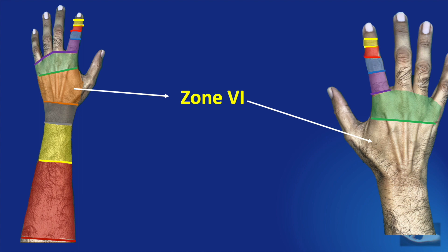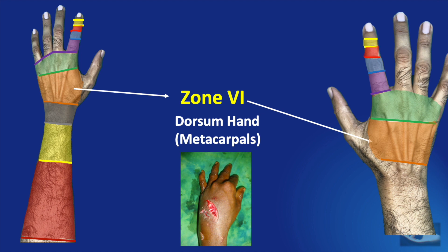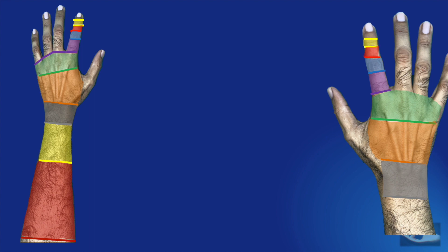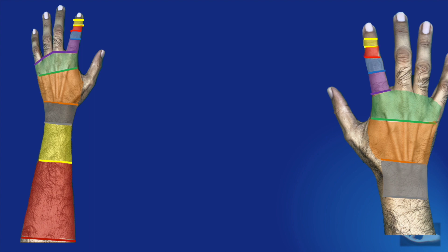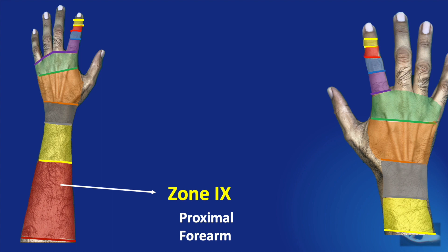Zone 5 injury represents injury to the extensor apparatus over the metacarpophalangeal joint of the fingers. Zone 6 injury indicates injury to the extensor tendon on the dorsal aspect of the hand over the metacarpal bones. Zone 7 injury refers to injury to the extensor tendon under the extensor retinaculum, dorsal to the wrist joint. Zone 8 represents injury to the extensor tendon in the distal third of the forearm.